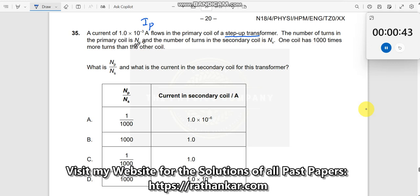The number of turns in the primary coil is NP, number of turns in the secondary coil is NS. One coil has 1000 times more turns than the other. It is not very clearly mentioned whether the NP is given or NS is given, number of turns in primary or secondary is not given.